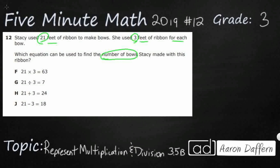And so you notice all of our answer selections, F, G, H, and J, they're all going to use 21 and 3, the only two numbers we have in the problem. And they're simply going to use a different operation: multiplication, division, addition, or subtraction.